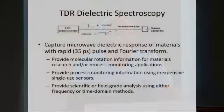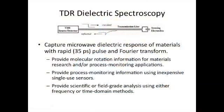In a nutshell, we're monitoring small molecule processes and materials which we can use as a process monitor by embedding a sensor in the material and sending a very fast pulse down to the sensor, looking at what comes back. We interpret this to provide molecular rotation information for materials research and process monitoring applications.